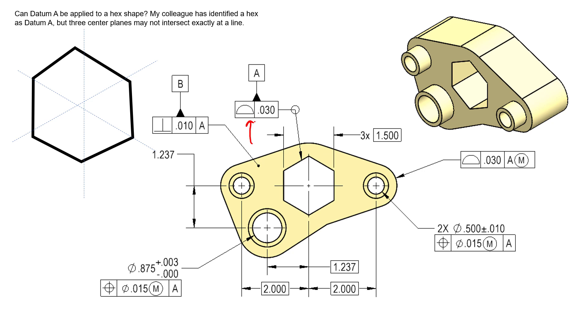As you can see, we're qualifying this datum feature with profile of the surface. So even though we know that the actual surface we're measuring won't be a perfect hexagon, we can guarantee some level of size and form using the profile callout right here. So we're making sure that all of the elements of this surface stay inside that tolerance zone that's qualifying datum feature A—saying hey, let's make sure it's a good hexagon shape.